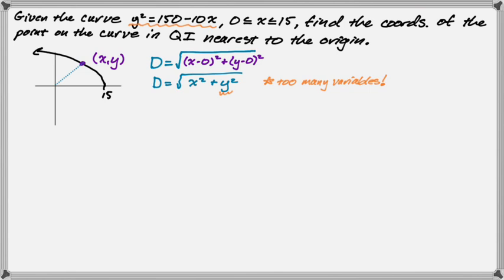All right. So I'm going to replace y² with 150 - 10x. So I get D is the square root of x² plus the quantity, 150 - 10x. All right. So I want to minimize this. And what you could do is you could take the derivative, set it equal to 0, and solve. That's a very common thing to do, and that will definitely work for you. But what I want to do in this problem is something a little bit different. I'm actually going to square D,